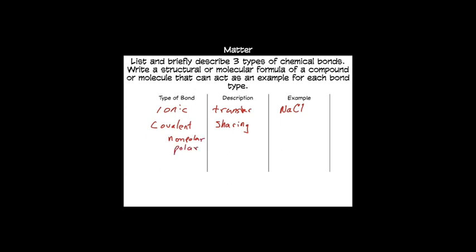So when they're sharing, if it's an equal sharing, we call it a nonpolar bond. If it's an unequal sharing, we call it a polar bond. So a couple of examples of these, a nonpolar bond would be something like, and I guess in the example up here it says that I can use structural formulas too.